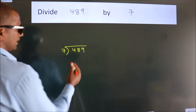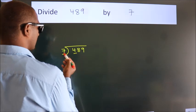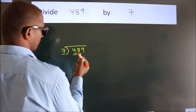Next, here we have 4, here 7. 4 is smaller than 7, so we should take two numbers, 48.